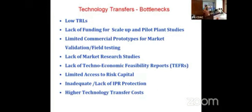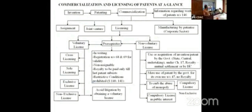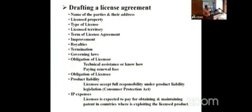Some technologies fail due to lack of scale-up funding, limited commercial prototypes, lack of market research, lack of technology feasibility reports, limited access to risk capital, absence of patent protection, or high technology transfer costs. We also need social scientists along with technical scientists to do market studies. A patent licensing strategy goes from invention to patenting, then technology development, then licensing — either patent alone, selling the IP, or licensing on exclusive/non-exclusive/multiple-base terms. Agreement drafting is also a critical job of the IPR cell.